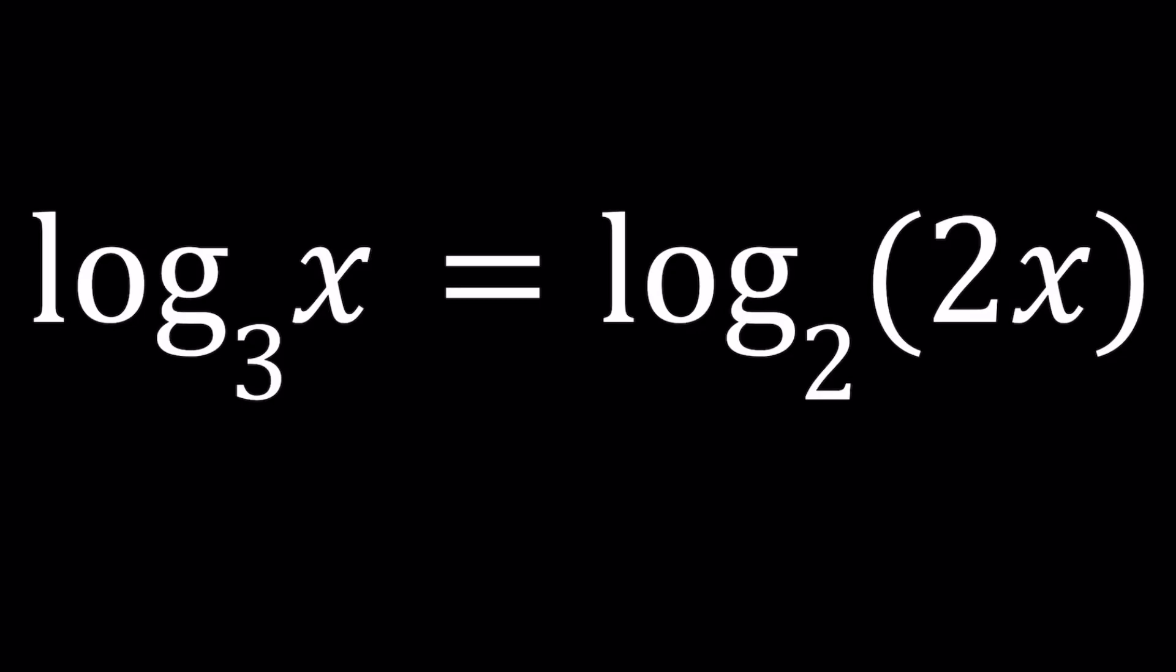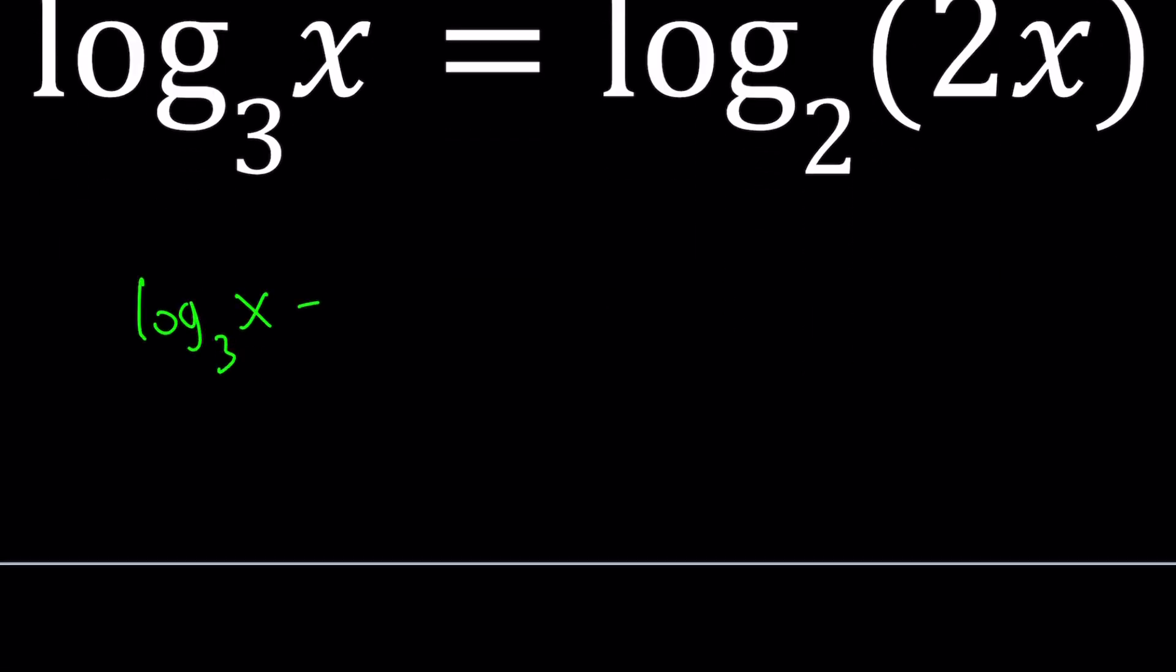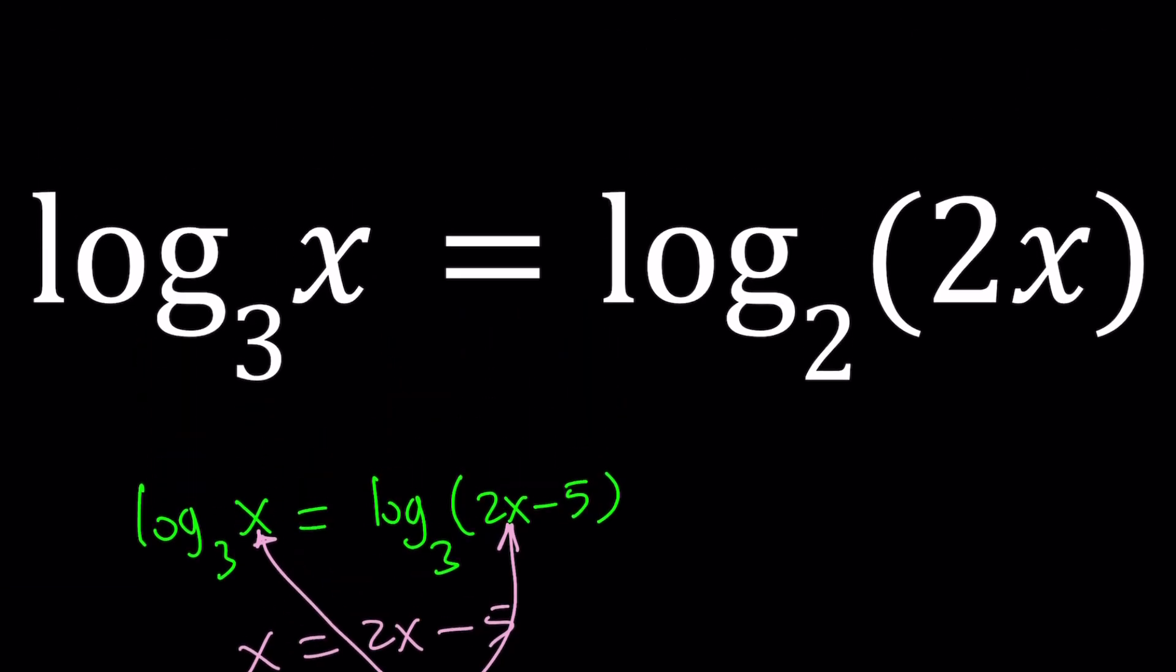Hello everyone. In this video, we're going to be solving a logarithmic equation. We have log x with base 3 and log 2x with base 2. One of the things that makes this problem interesting is different bases. When you have the same base, these kinds of problems are fairly easy to solve. Suppose you had log x with base 3 equals log 2x minus 5 with base 3. Then you can easily say that since the bases are equal, we can safely say x equals 2x minus 5, and from here we get x equals 5. But the bases are different, so what are we going to do?